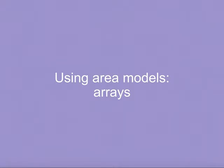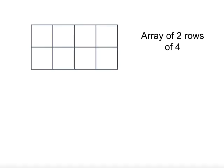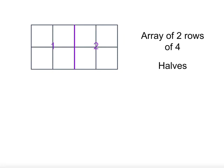The first model we will look at are arrays. Remember, an array is a neat rectangle of rows. Here we have an array of two rows of four. If we look at this picture, we can concentrate on these lines to show quarters — one quarter, two quarters, three quarters, and four quarters is the whole. We could also concentrate on the line in the middle to show that two halves make the whole, or look at the individual squares to show that eight eighths make the whole. We can see lots of different fractions in the array — it just depends on how we look at it.